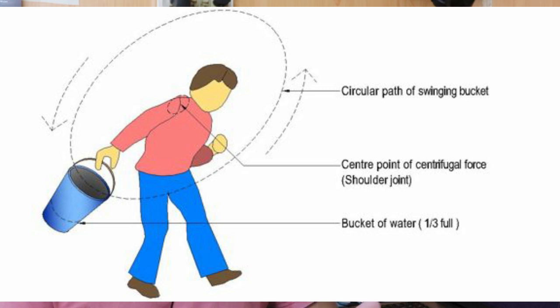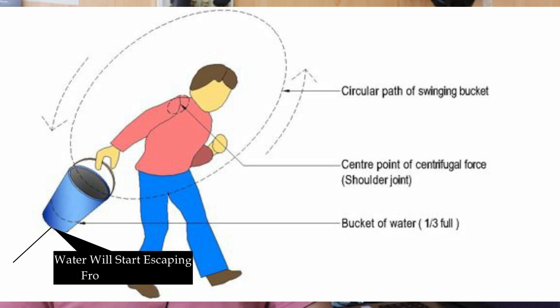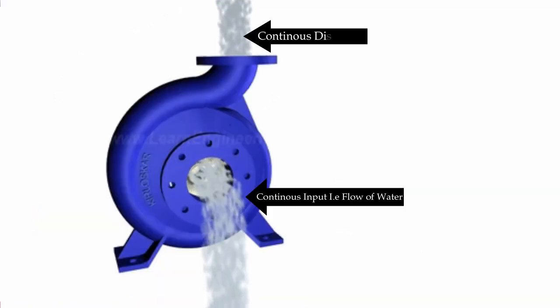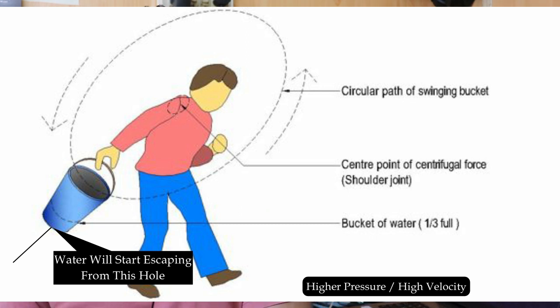To understand the principle, consider a bucket partially filled with water. When you rotate that bucket, the water tries to escape radially. If a hole is punched at the end of the bucket and water continuously fills it while rotating, the water escapes through the hole with higher pressure and higher speed. This is the same principle used in the centrifugal pump, which is also called a continuous discharge type pump.